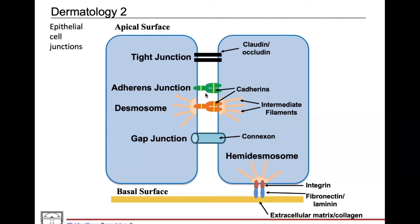Importantly, if you lose adherence within the adherens junction or within desmosomes, you're actually prone to metastasis — you'll hear about that in certain types of cancers. Moving to desmosomes: they're also made of cadherins, just like adherens junctions, but the difference is that desmosomes connect intermediate filaments within the cells, making them more integral to cell structure. Autoantibodies in Pemphigus vulgaris target desmosomes, specifically desmoglein 1 and/or 3 — that's super high-yield to remember.